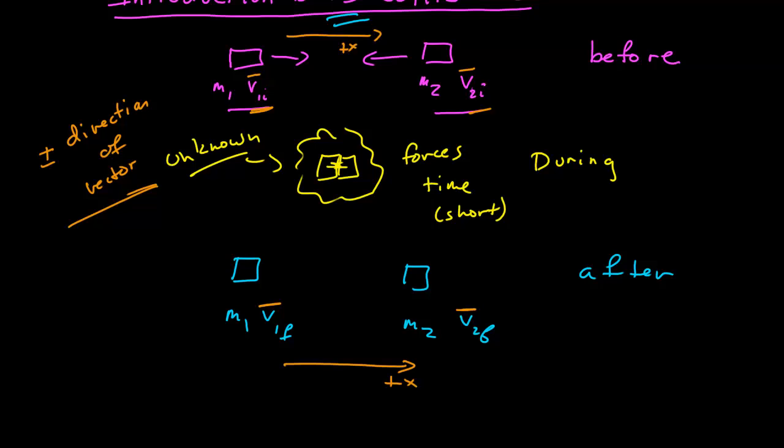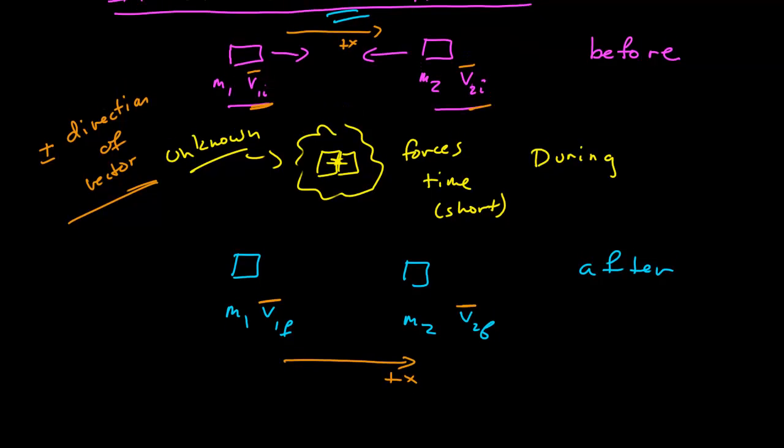So back to this idea of collisions. We have this before, during, and after. And the magic of this sort of collision physics is that we often don't know or don't care what happens in the complicated during phase when they're colliding themselves. We have information about what happened, what their conditions were before, and we can use that in our conservation laws to determine what were the conditions of the particles after.